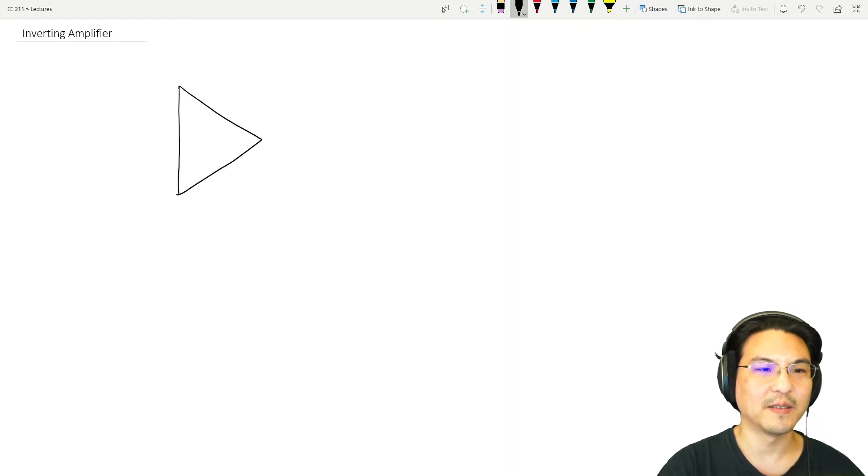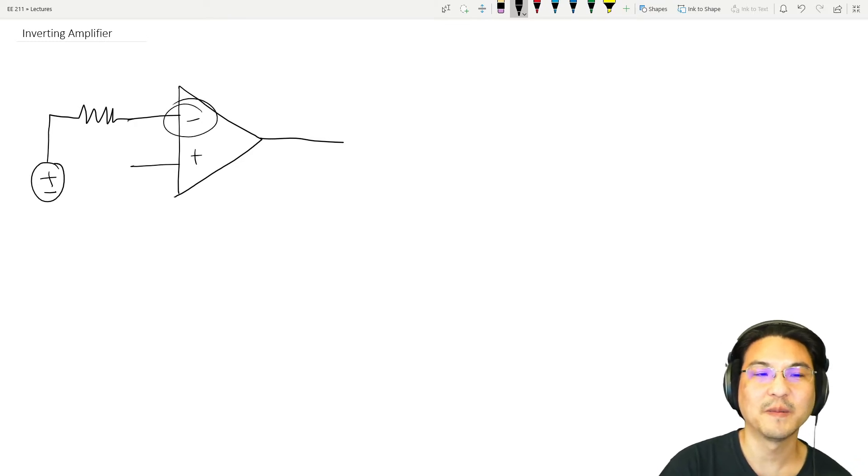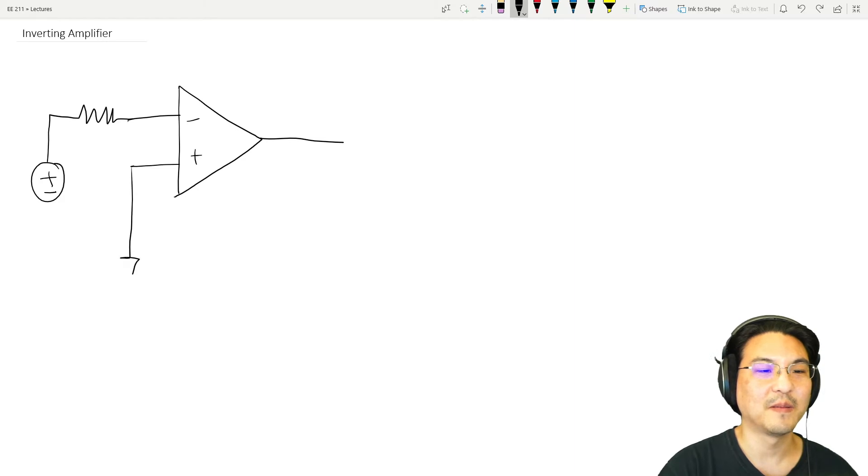Here's how you would build it. Here's the op-amp. We're going to feed some kind of signal into the inverting input right here, and we're just going to ground out the non-inverting input.